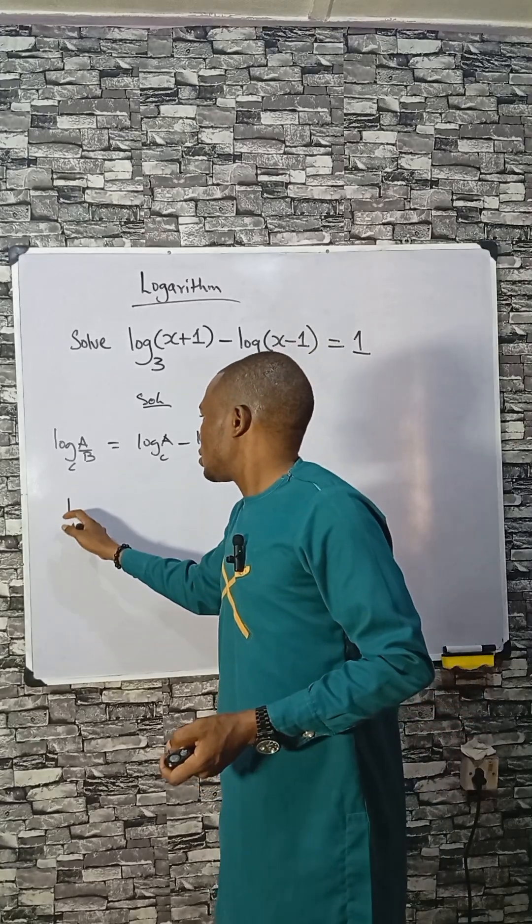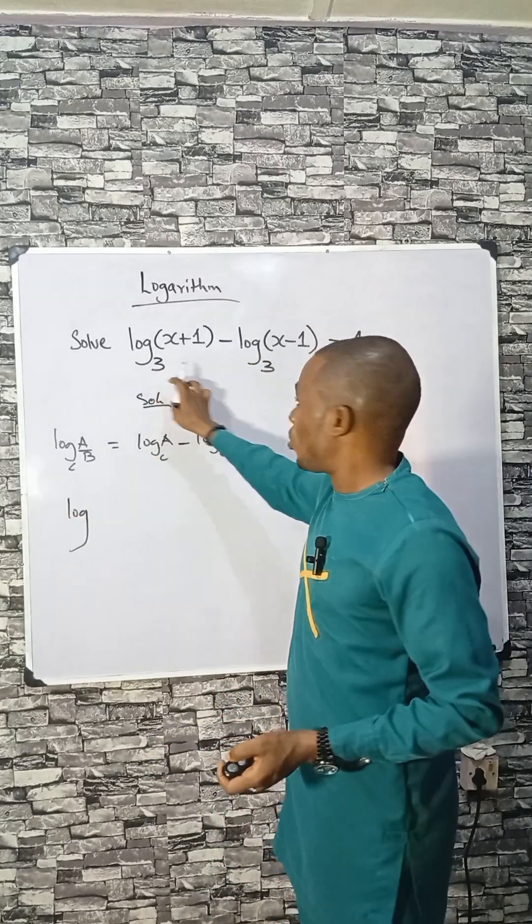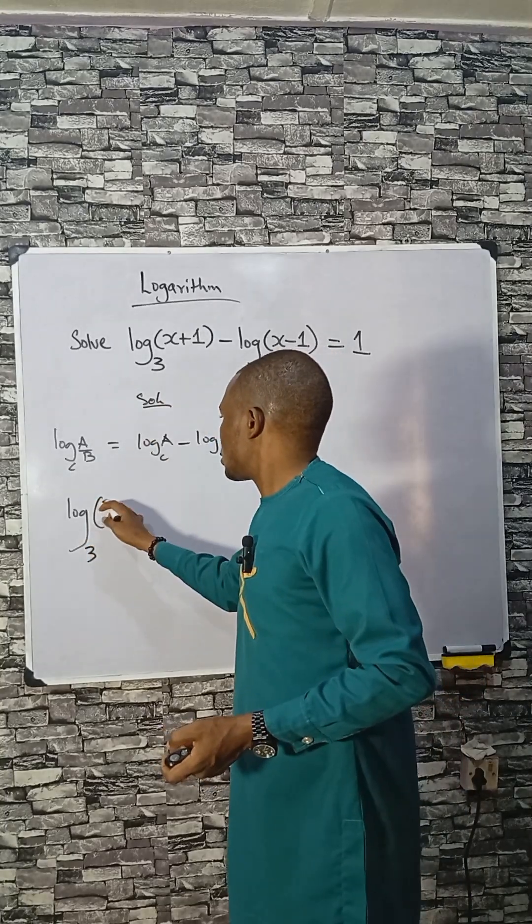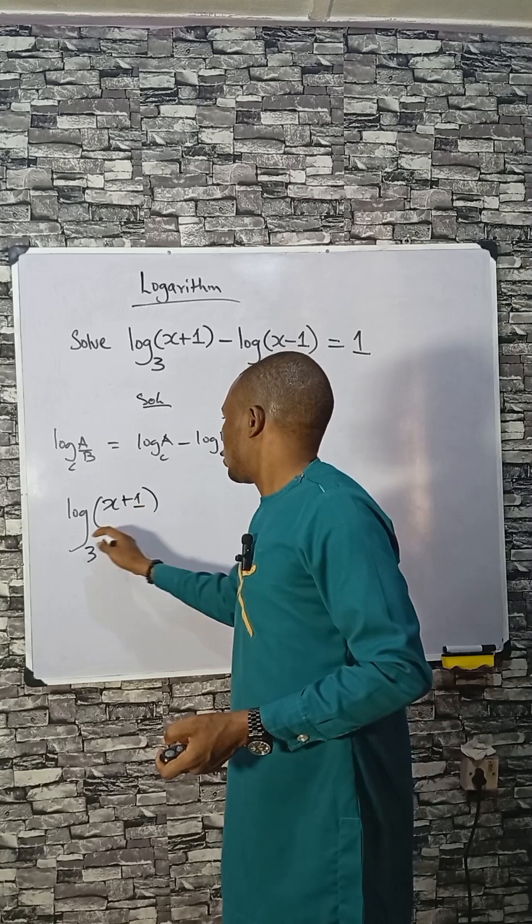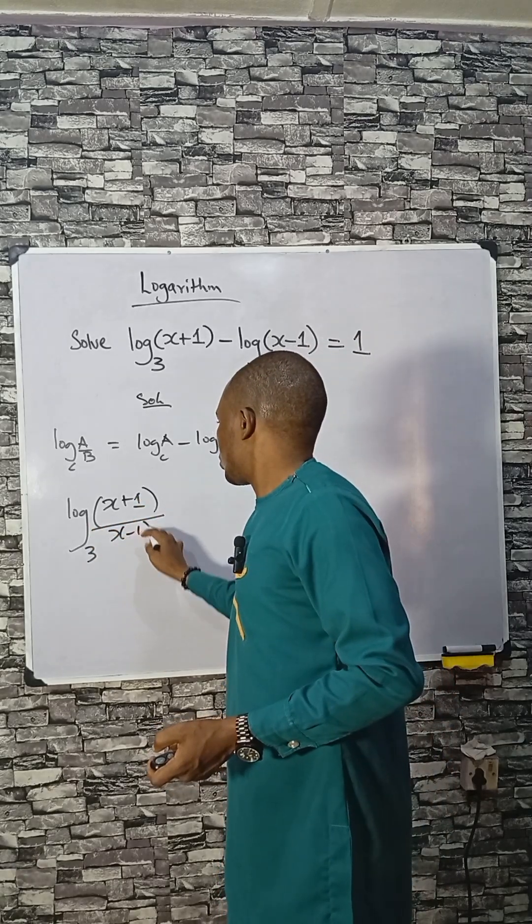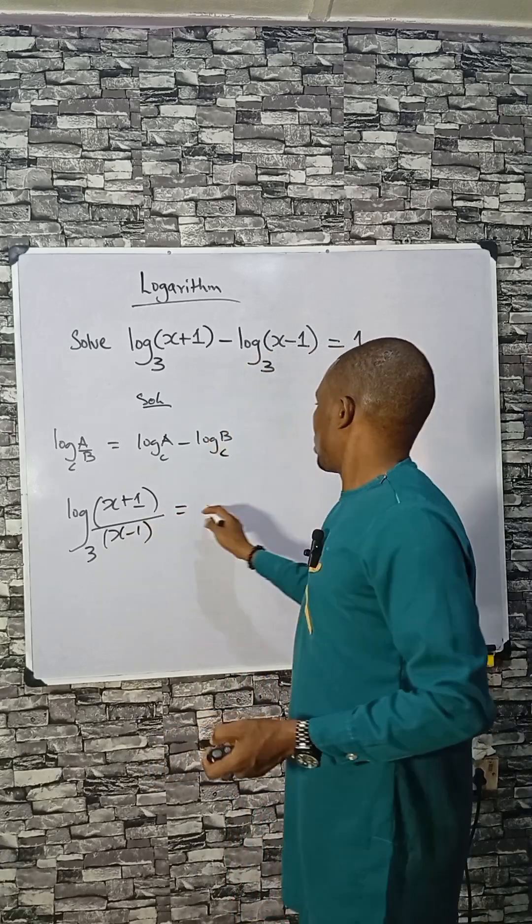So we have this as log, the basis is 3, common base 3, that will be (x+1) divided by (x-1), and is equal to 1.